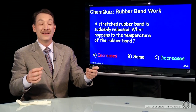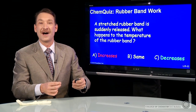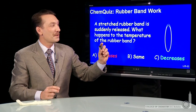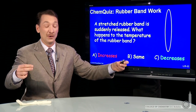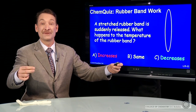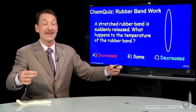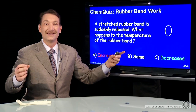A rubber band is a system that could do work or have work done on it. Let's take a rubber band and stretch it, hold it there so it comes to thermal equilibrium, and then suddenly release it.